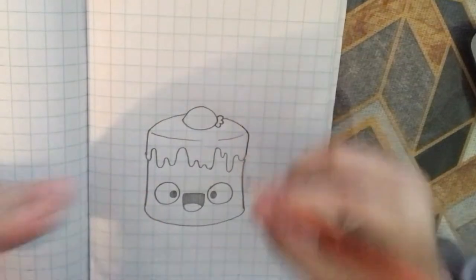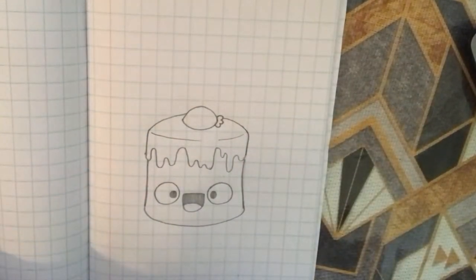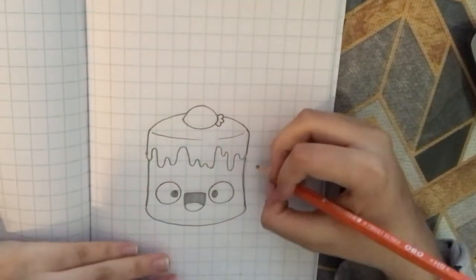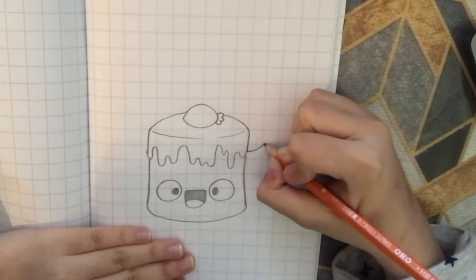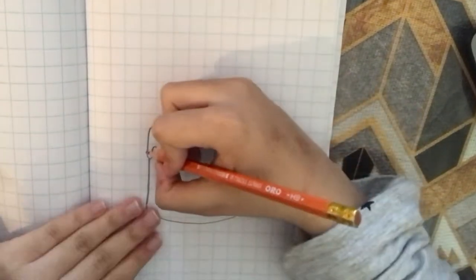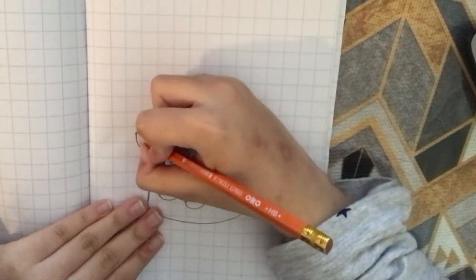Now this is supposed to be an angel food cake, so I want to make this a bit like an angel. We're going to draw the wings. We're going to bring in an upper curve, and same thing over here.